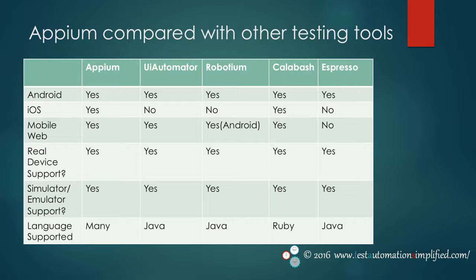APM also supports Firefox OS. As you can see from this table, Calabash supports only one programming language, which is Ruby. There is no such limitation with APM. For APM, you can write test cases in almost any language. APM also enjoys wide community support, which is something Calabash lacks.